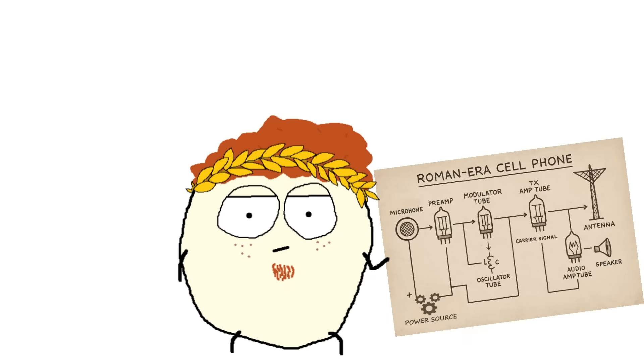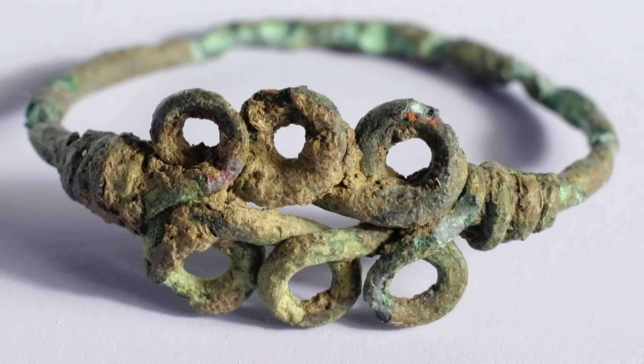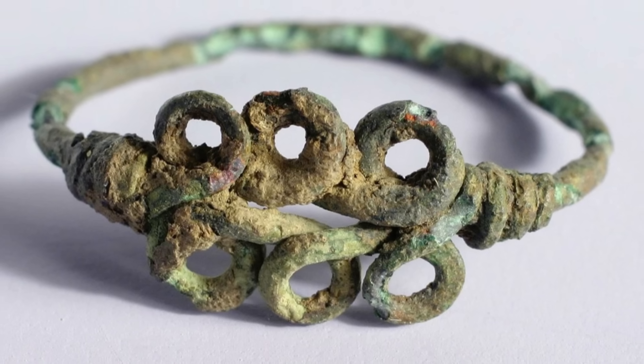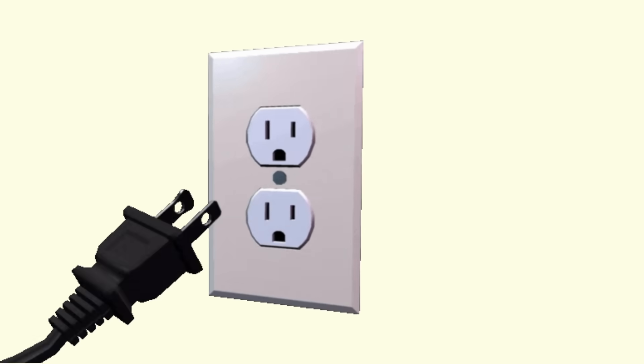We're gonna need a microphone, amplifier, modulator, oscillator, power source, antenna, and a speaker. Most of the stuff needed to build these things already exists. Including wire which had been around for centuries already, mainly for jewelry. The main thing Fred's lacking is electricity.